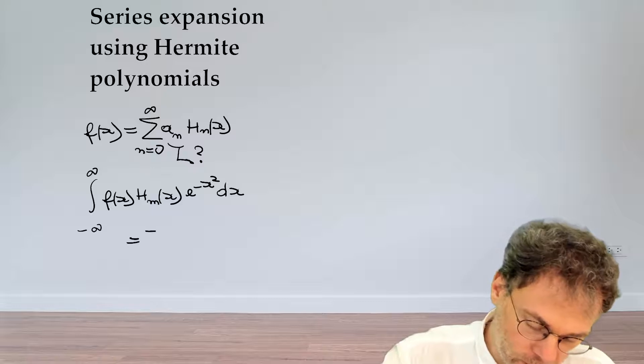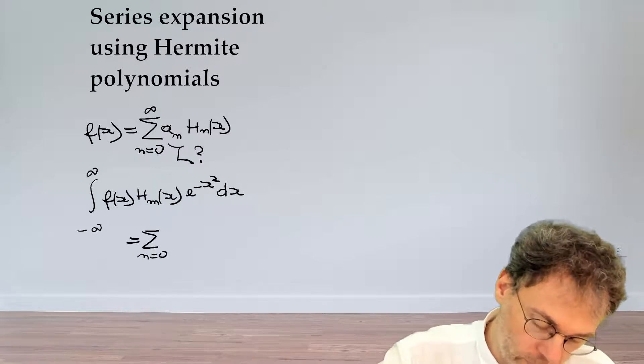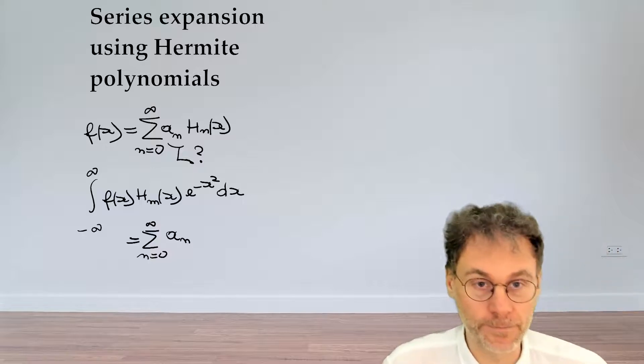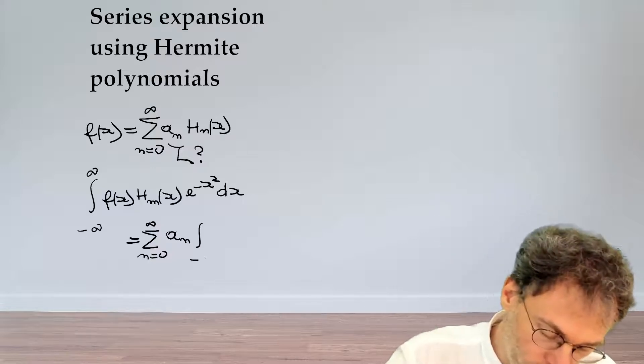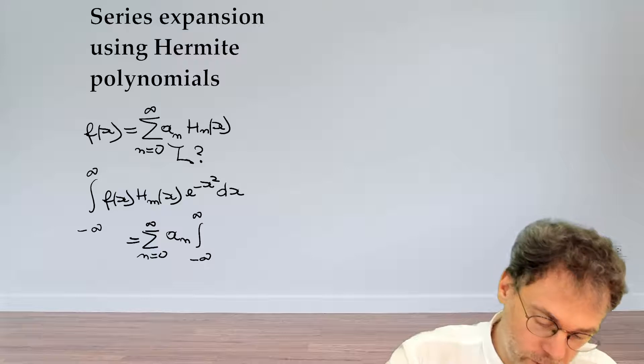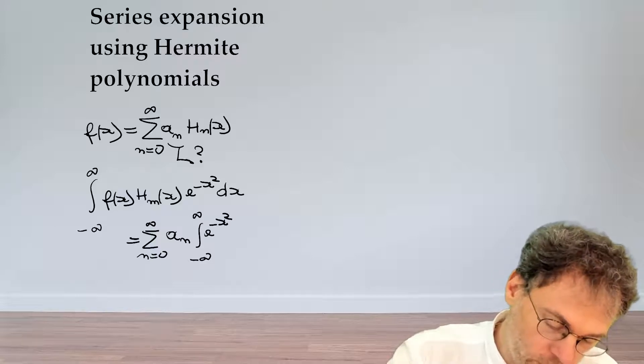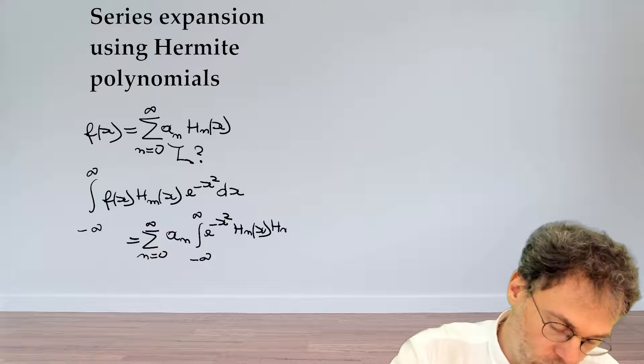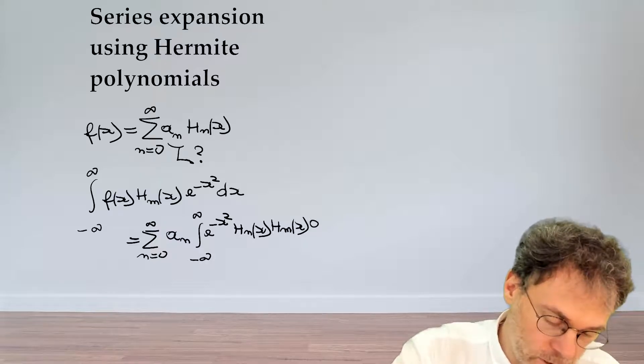And then for the right hand side you have sum n going from zero to infinity a_n H_n, and then you have the integral from minus infinity to plus infinity of e^(-x²) H_n(x) H_m(x) dx.